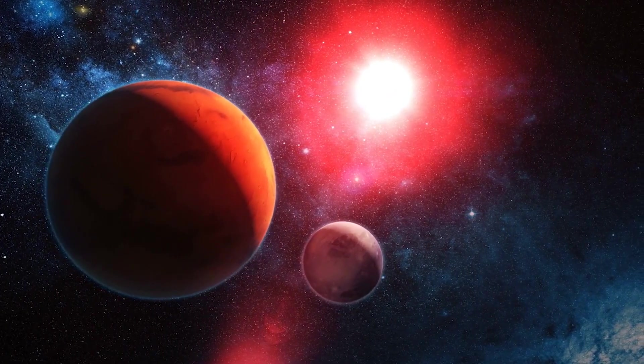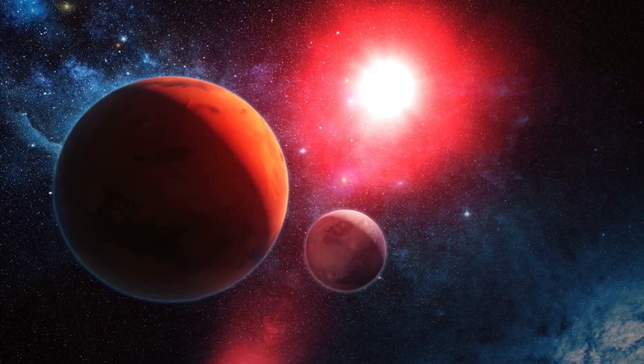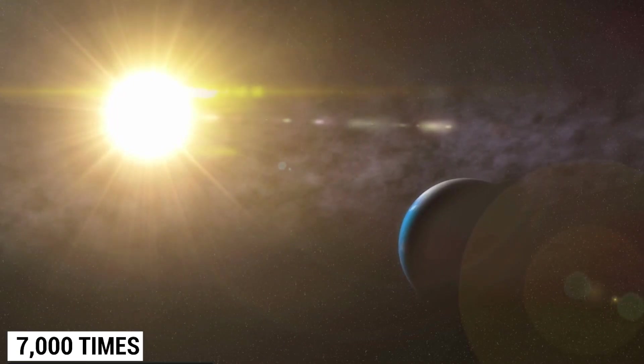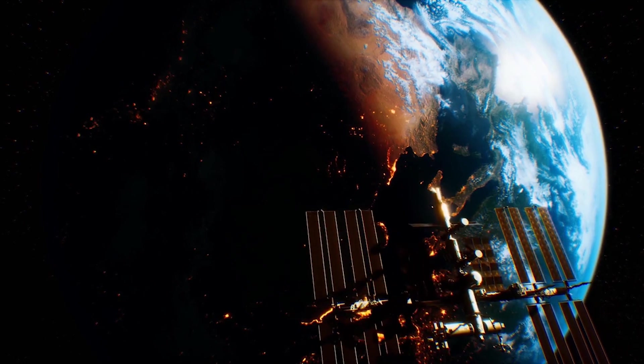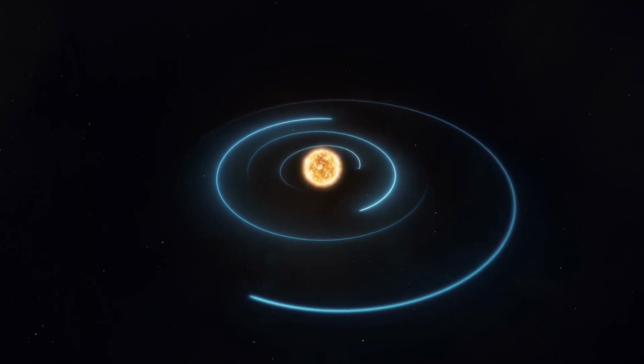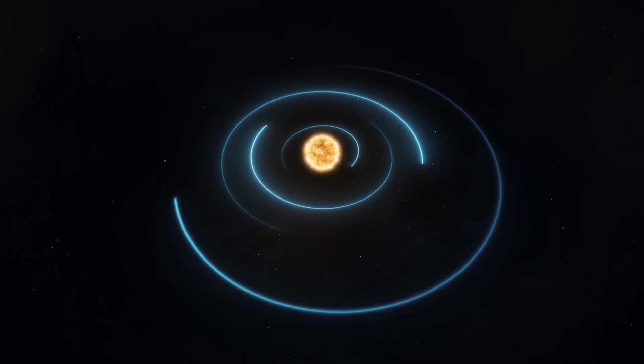Later, measurements revealed that the planet is a trillion kilometers away from its star as it goes around it. This is about 7,000 times as far as it is from Earth to the Sun. Up to this point, no other planet is known to have a larger orbital radius. Because its orbit is so big, a year spent on this exoplanet is about the same as 9,000 Earth years.